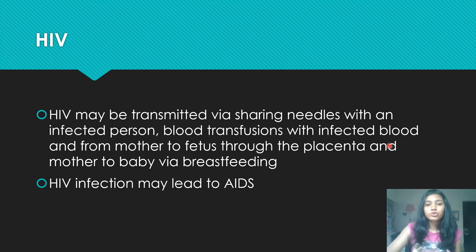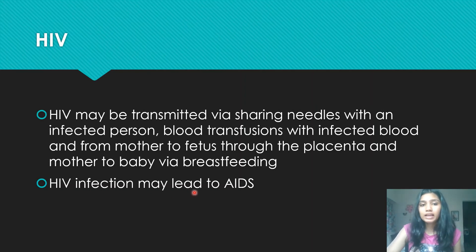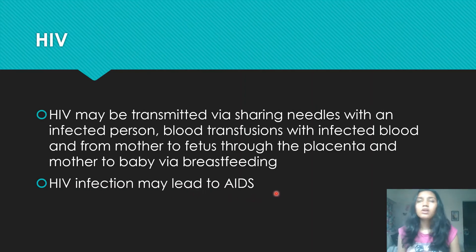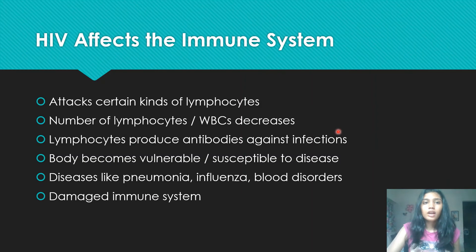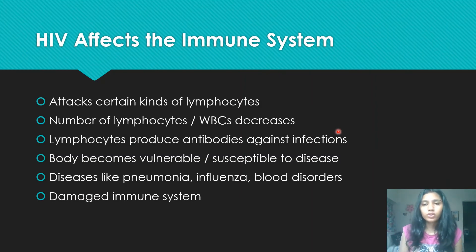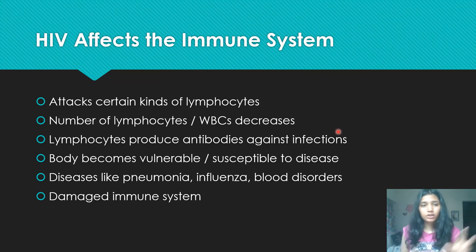You should also be able to state that an HIV infection may lead to AIDS — acquired immunodeficiency syndrome. You don't necessarily need to know the full form, but note that HIV infection leads to AIDS. Now, how does HIV affect the immune system? This is a very important marker question in most papers, and it is also linked with chapter 10, disease and immunity.